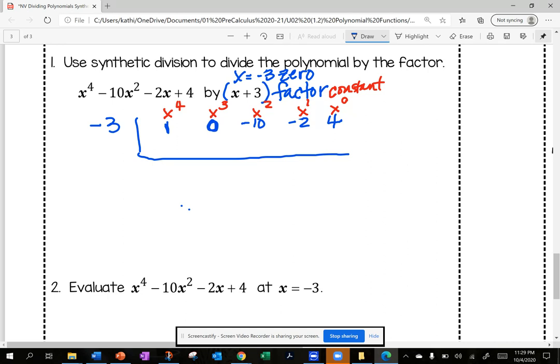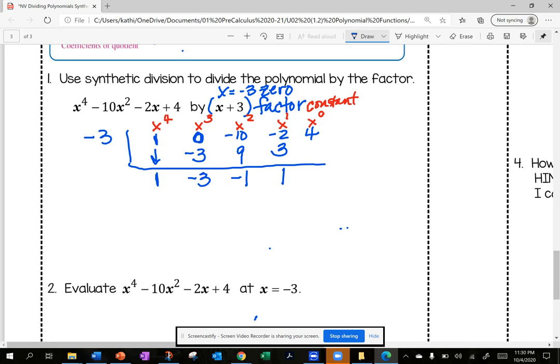The process is: bring the first term down. I'm going to multiply. Negative 3 times 1 is negative 3. I'm going to add down: 0 plus negative 3 is negative 3. I'm going to multiply negative 3 times negative 3 and get positive 9. Add down, I get negative 1. Negative 3 times negative 1 is positive 3. Add down, I get positive 1. Negative 3 times 1 is negative 3. Add down and I get 1. So 1 is my remainder.